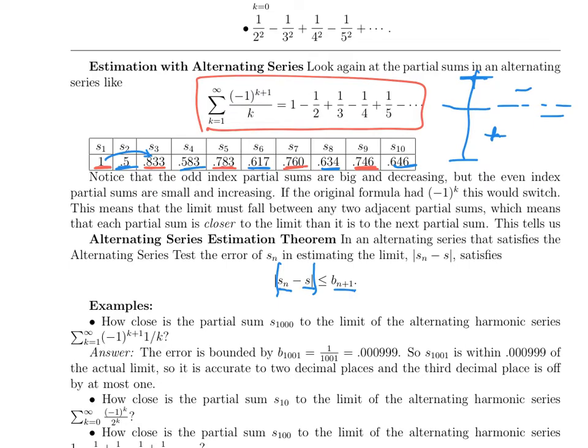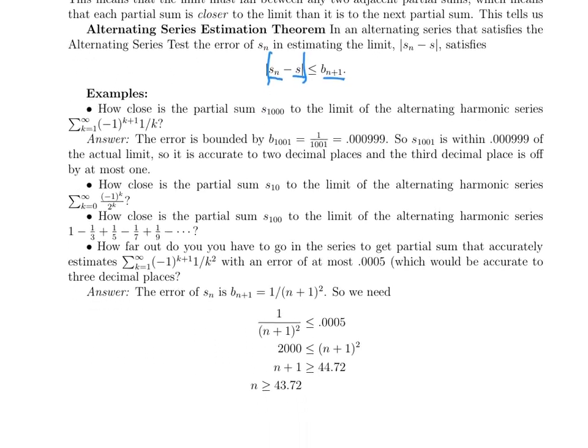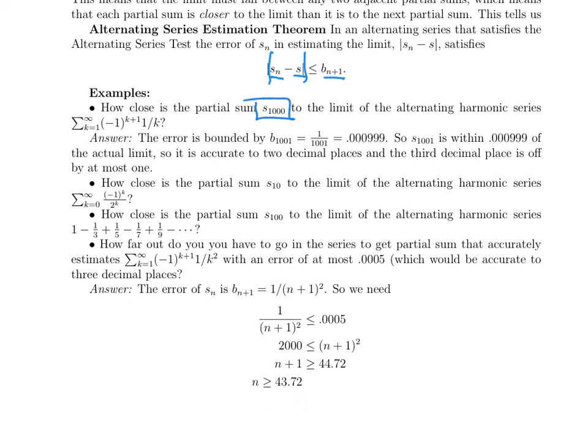Let me give you some examples. How close is S₁₀₀₀ to the limit of the alternating harmonic series? The answer is the error is bounded by the next term, 1/1001, which is 0.000999. So S₁₀₀₀ is within almost 0.001 of the actual limit. So that means it's accurate to two decimal places, almost three. It's off by at most one in the third decimal place.